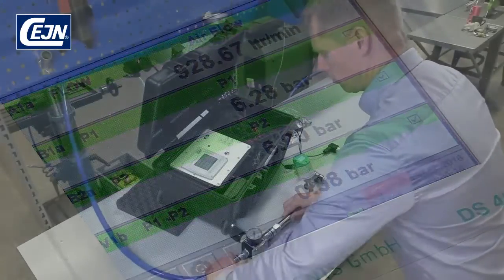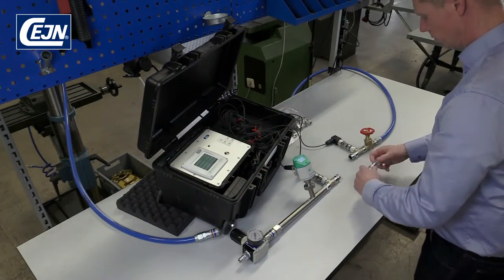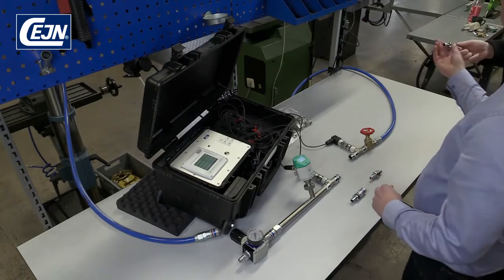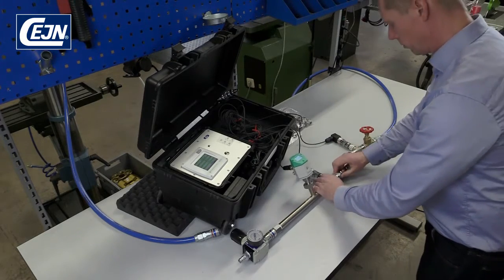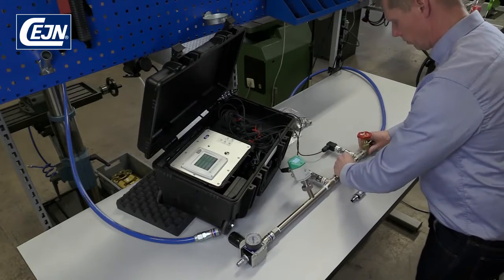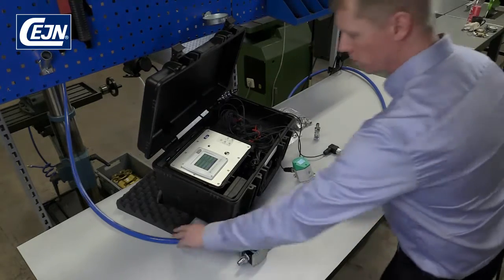Once you've completed the measurement, disconnect the hose and change the coupling. Here we have the competitor's coupling. We're connecting everything as before and not changing anything apart from the coupling. Check that everything is assembled correctly and, finally, connect the hose.